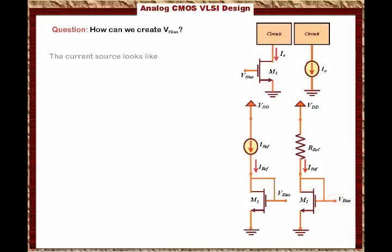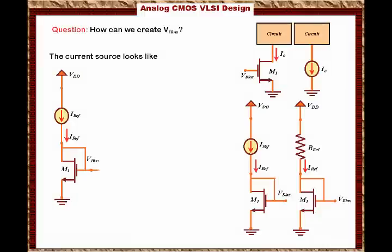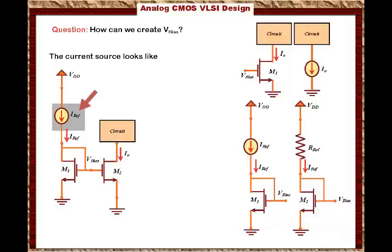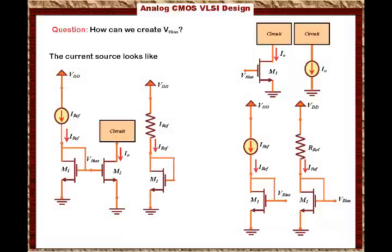Then the overall current source circuit will look like this. I have VDD connected to IREF — which is the resistor R_reference — connected to the diode-connected transistor, which gives me V_bias. Now V_bias is connected to the current source transistor M2, and that is connected to the circuit. So what I have is VDD connected to a resistor, connected to a diode-connected transistor that creates V_bias for me, and V_bias controls the current source transistor M2, giving me the right output current I_out that biases the circuit.